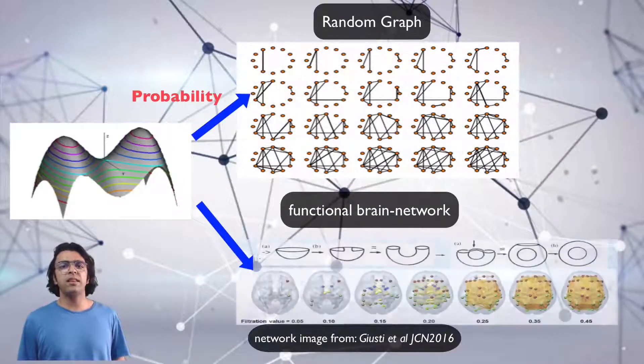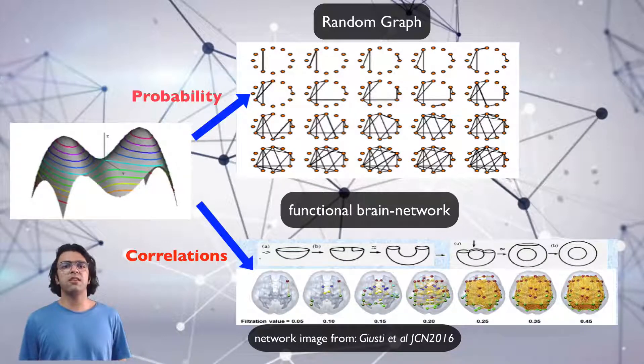The level sets correspond to the probability in a random graph and to correlations in a functional brain network.